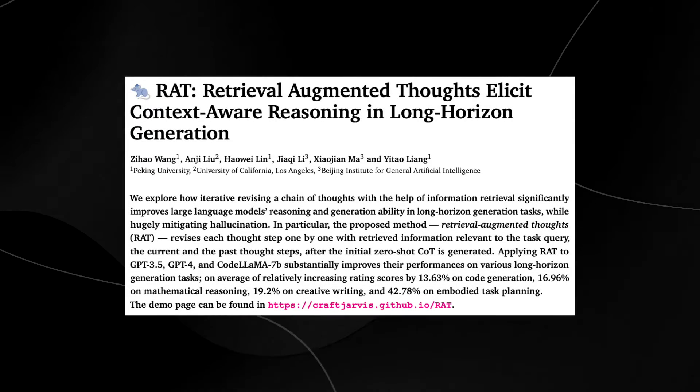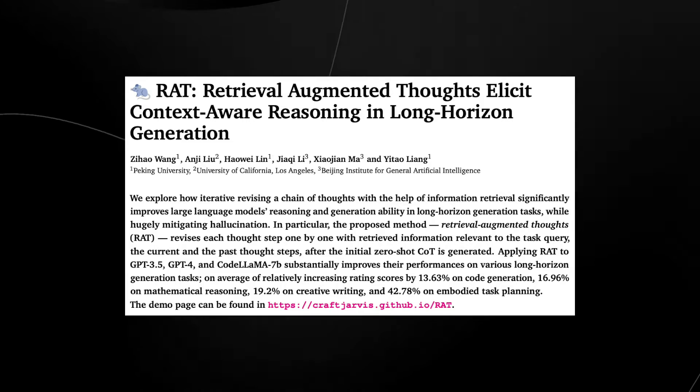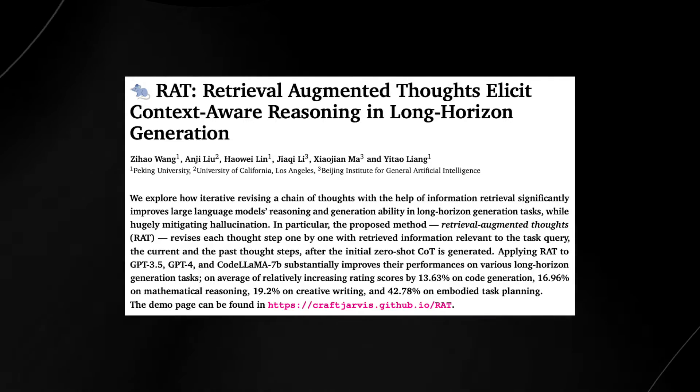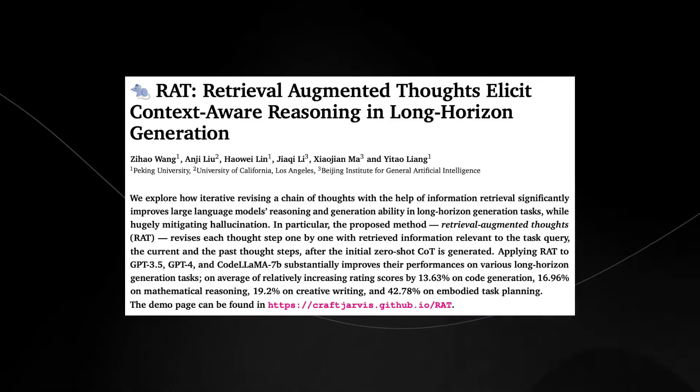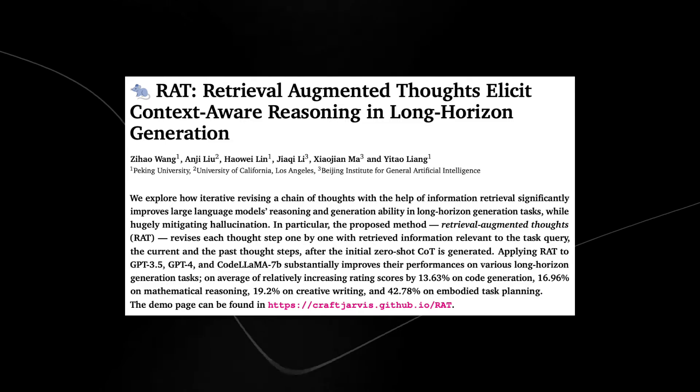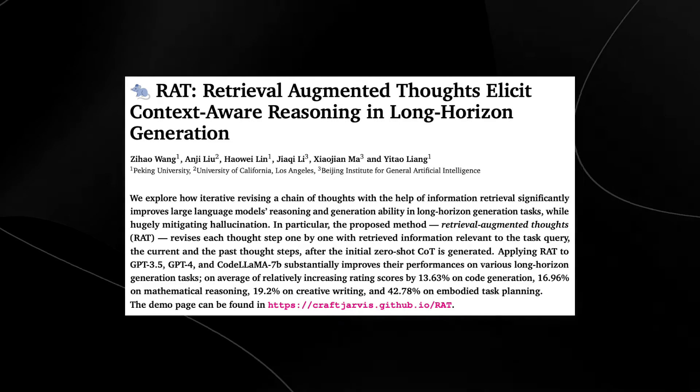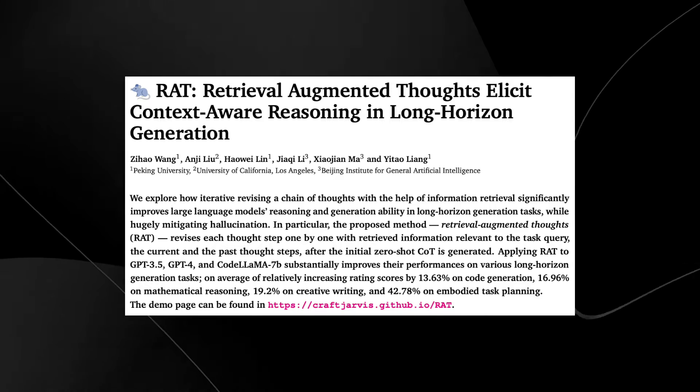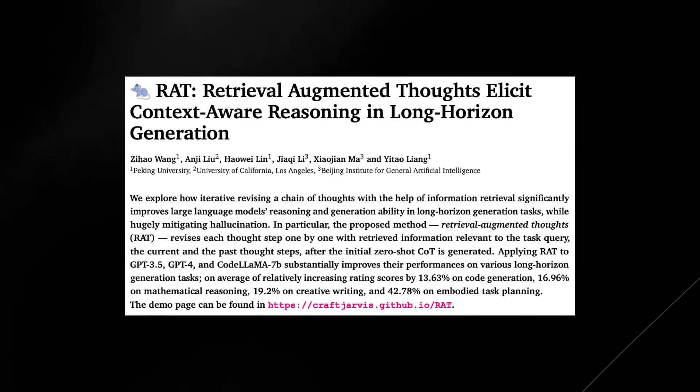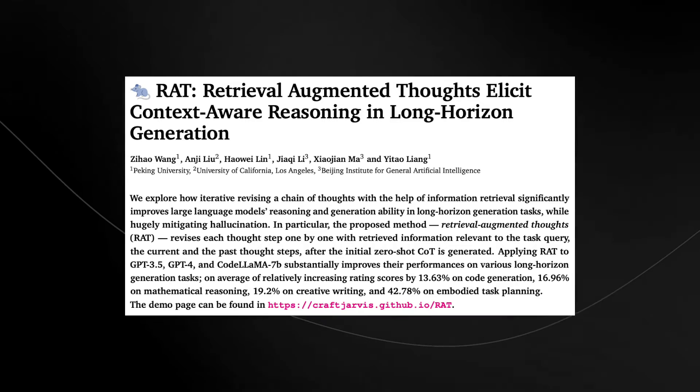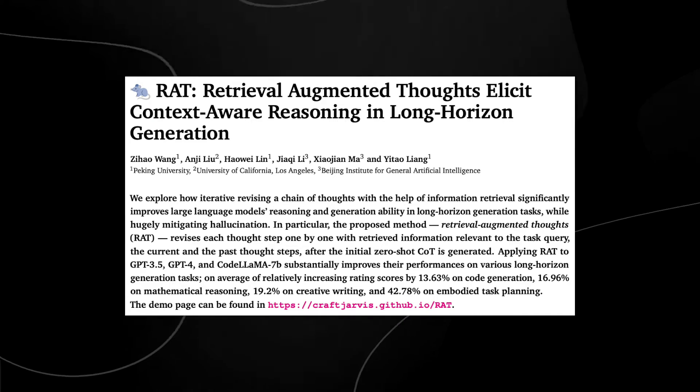Today, we've got something truly groundbreaking to explore. It's about making AI think and reason more like us, tackling complex problems with a finesse that was previously unthinkable. We're talking about RAT, Retrieval Augmented Thoughts, illicit context-aware reasoning in long-horizon generation, developed by a team from Peking University, UCLA, and the Beijing Institute for General Artificial Intelligence. This method is changing the game. Let's dive in.